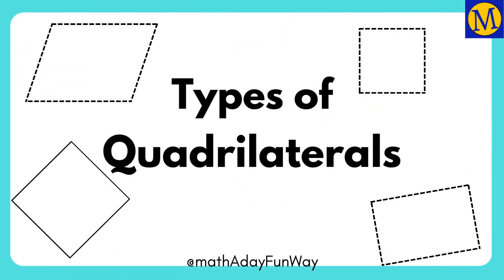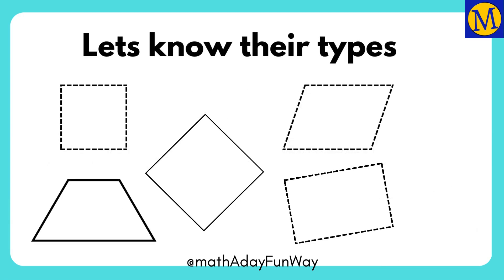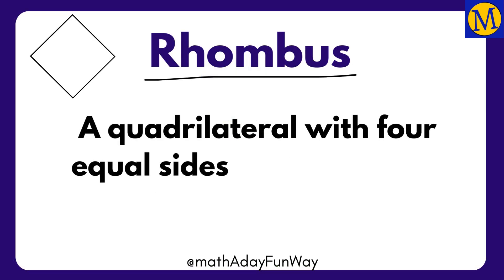There are different types of quadrilaterals. Some quadrilaterals are given special names because of their specific properties. The first criteria to identify the type of quadrilateral is equal sides. A quadrilateral with all sides equal is called a rhombus.